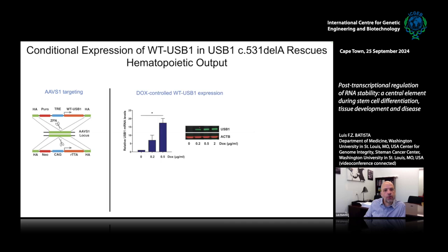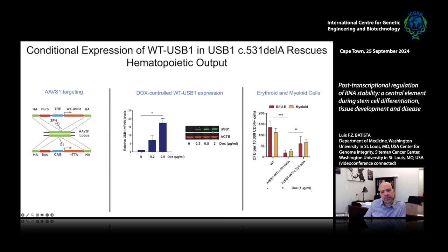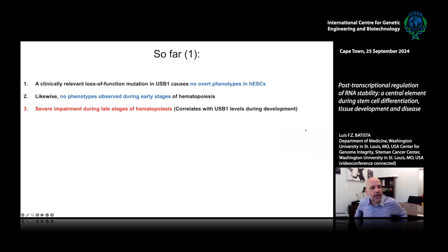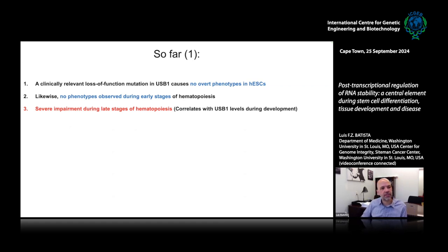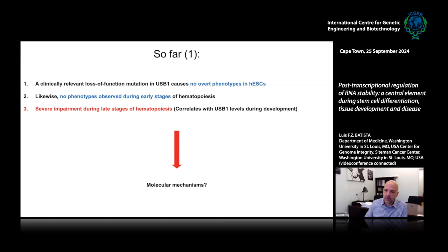It makes sense that it takes so long to see phenotypes because when we start looking at the expression of USB1 during this differentiation protocol, USB1 really only starts to get expressed in later stages of development. To confirm the mutation was causing these phenotypes, Ho Chang put wild type USB1 back into our USB1 mutant cells using a safe harbor locus in a conditional manner — only when treated with doxycycline does wild type USB1 get expressed — and we were very happy to see that indeed when we restore USB1 we have a rescue of the hematopoietic deficit.